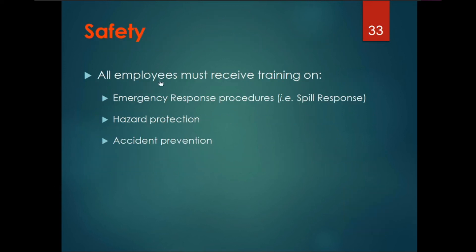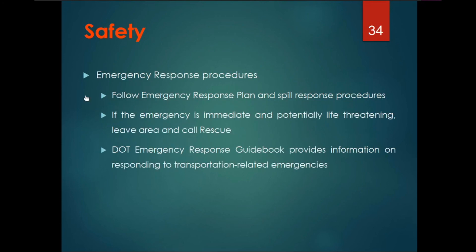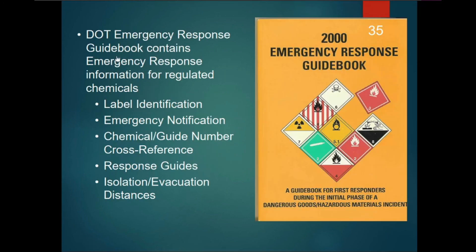Safety: all employees must receive training on emergency response procedures, hazard protection, and accident prevention. Emergency response procedure: follow the emergency response plan and spill response procedures. If an emergency is immediately and potentially life-threatening, leave the area and call for rescue. DOT emergency response guidebooks provide information on responding to transportation-related emergencies and contain emergency response information for regulated chemicals, including label identification, emergency notification, chemical guide numbers cross-reference, response guide, isolation, evacuation distances.